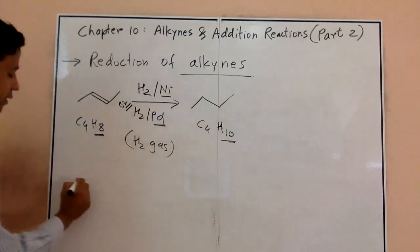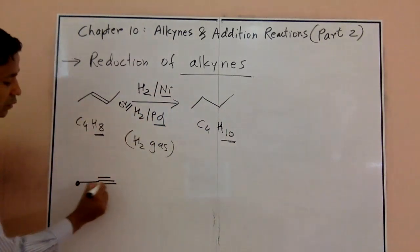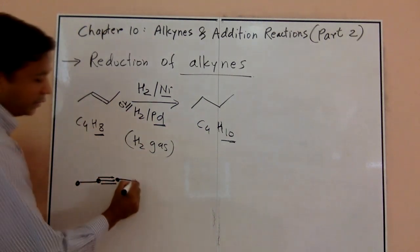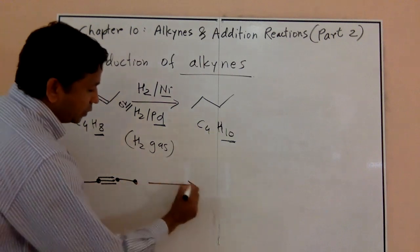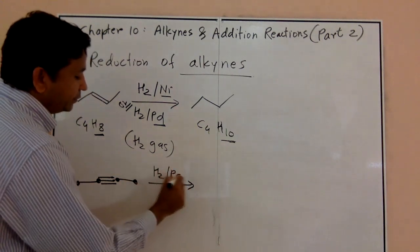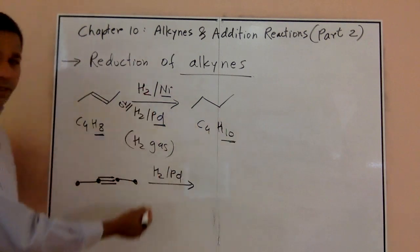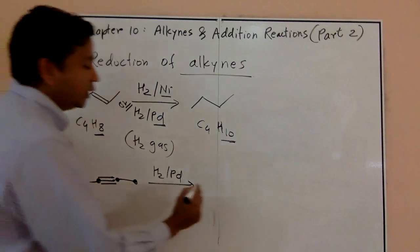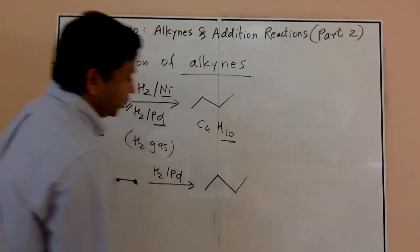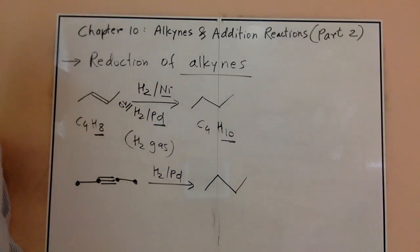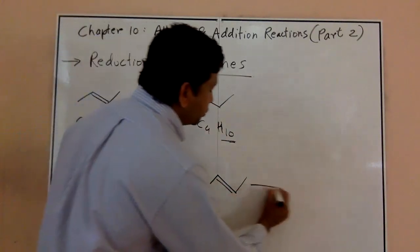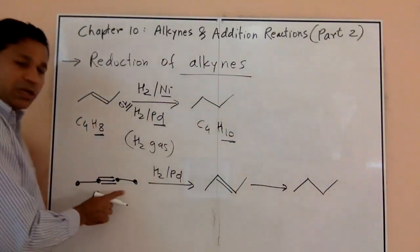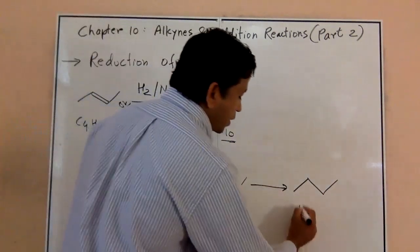The same is true for a triple bond. If you have a carbon-carbon triple bond and you throw H2 with palladium or nickel, it will change triple to double and then double to single bond. It's a sequential process — triple changes to double, then double changes to single. That single bond is your final product.